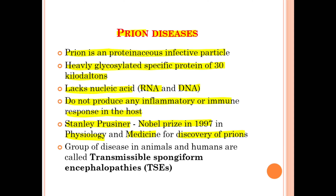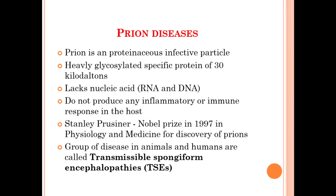The group of diseases in animals and humans that are caused by prions are called the Transmissible Spongiform Encephalopathies, also known as TSE.